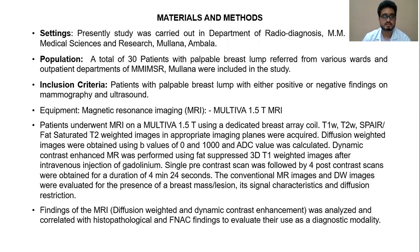A total of 30 patients were included in the study who presented with a palpable breast lump with either positive or negative ultrasound or mammographic findings. The MRI machine used was the Multiva 1.5 Tesla machine with a dedicated breast coil. T1, T2, and FATSAT T2-weighted images were obtained. Diffusion-weighted images using B values of 0 to 1000 and ADC were calculated. Dynamic contrast MR images were performed with IV gadolinium — a single pre-contrast scan and four post-contrast scans over a period of 4 minutes and 24 seconds — and our findings were compared with histopathological findings.